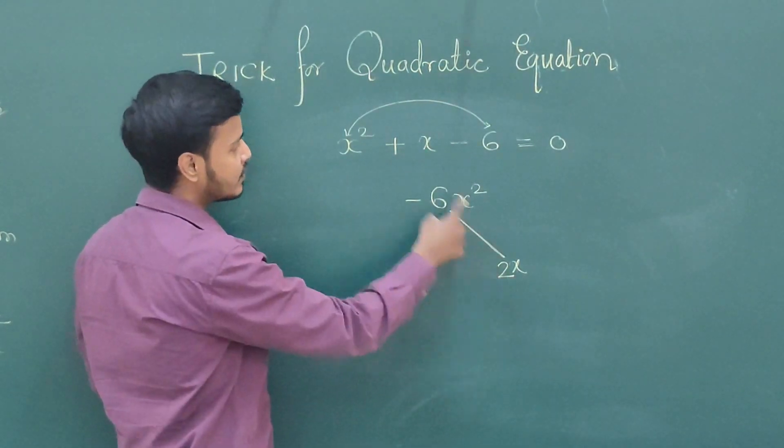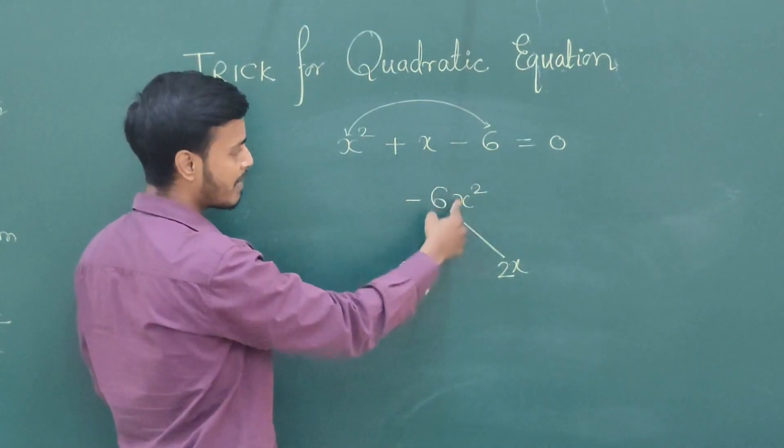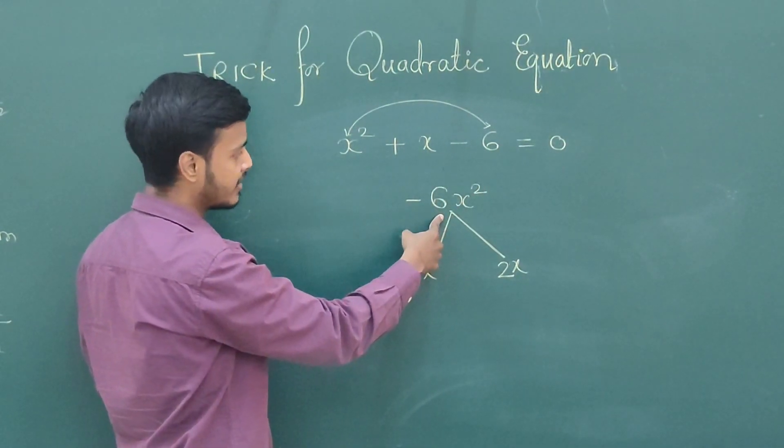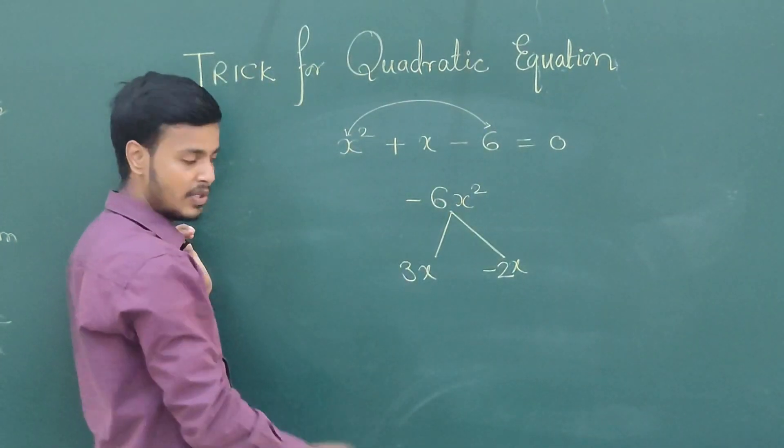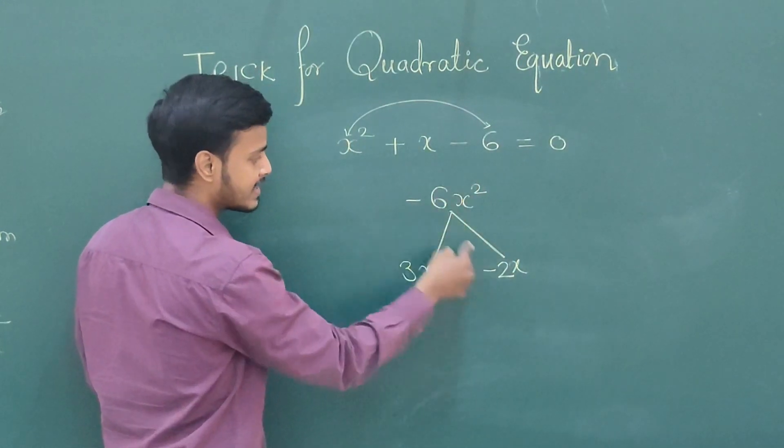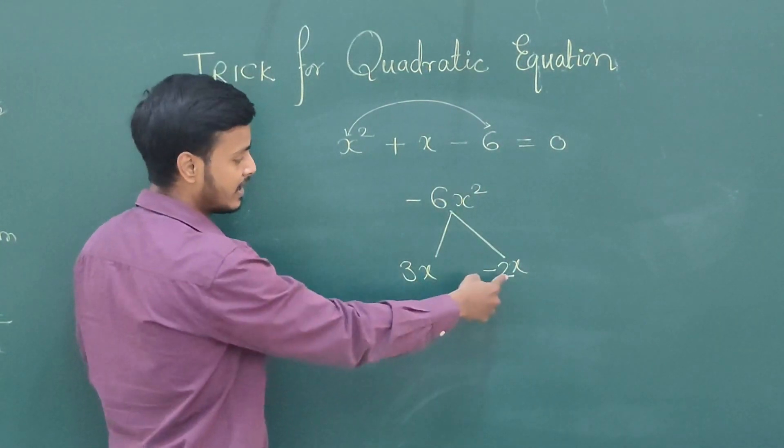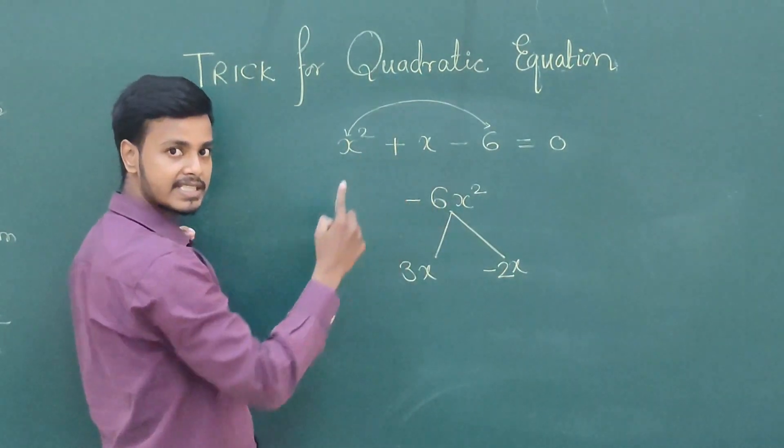Addition of this would be plus x. And multiplication should be minus 6x squared. So if I take this minus over here, this is 3 and 2, x into x is x squared, and this minus sign. So 3x minus 2x is plus x.